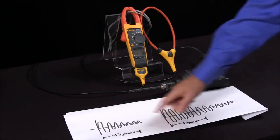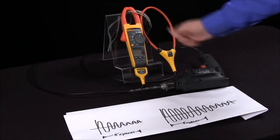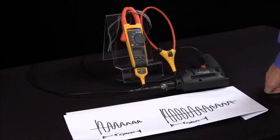And that is how we measure inrush current with the Fluke 375 or 376 current clamp.